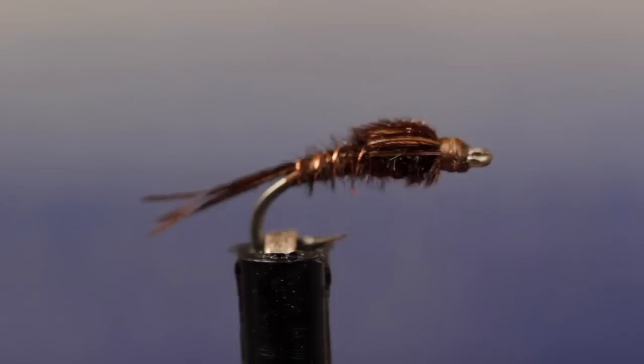This is a stripped-down, more English version of a pheasant-tailed nymph, and it's small, real small.